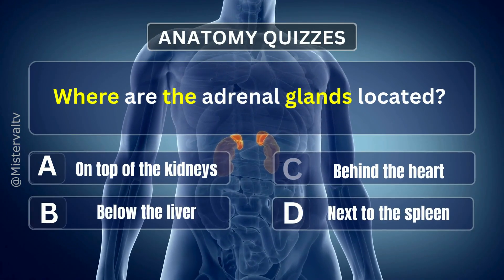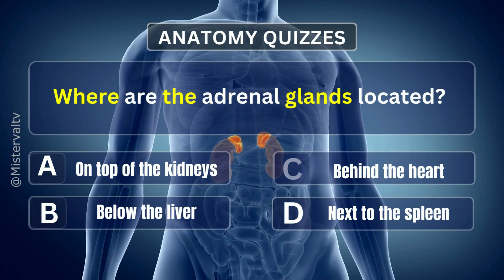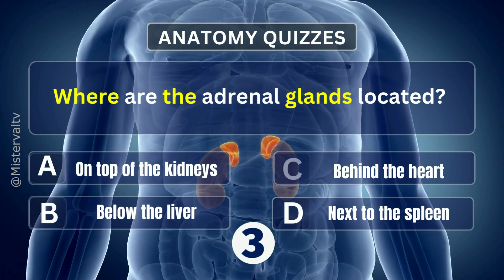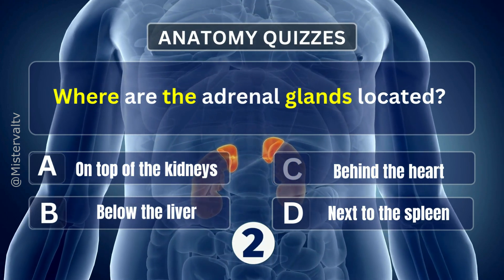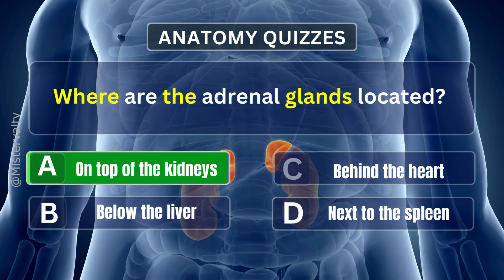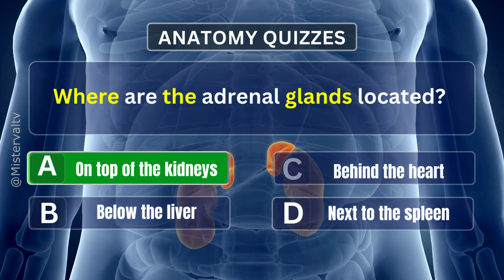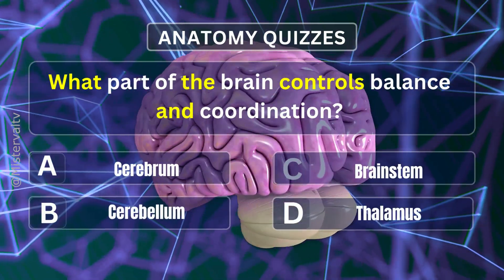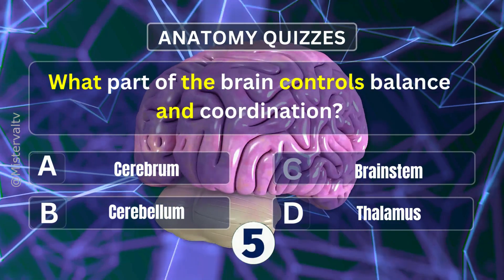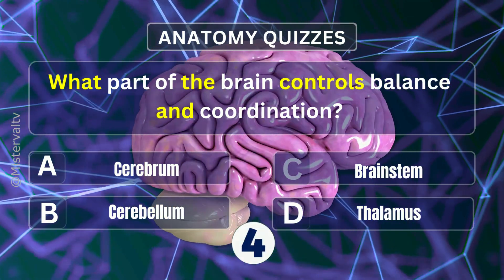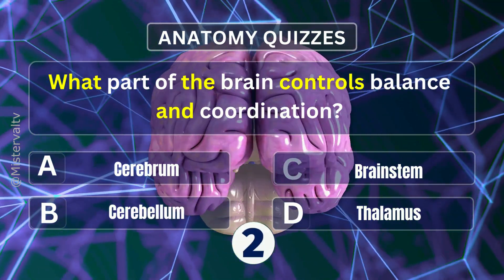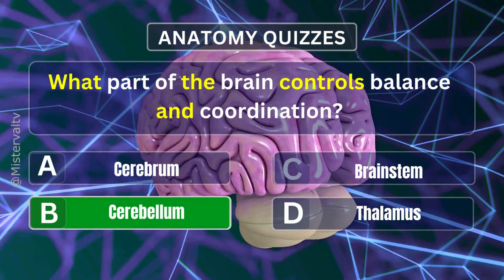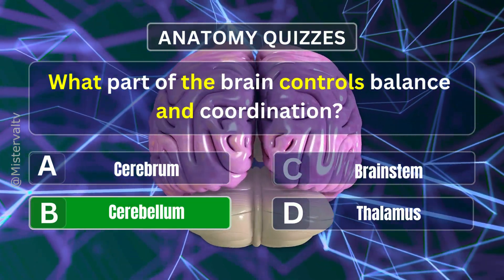Where are the adrenal glands located? Answer. A. On top of the kidneys. What part of the brain controls balance and coordination? Answer. B. Cerebellum.